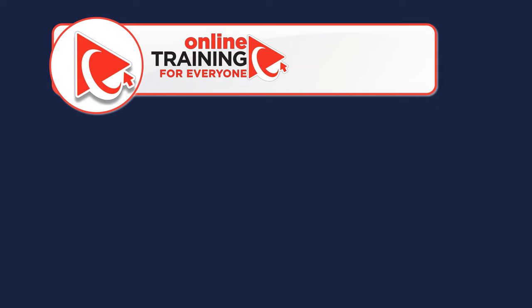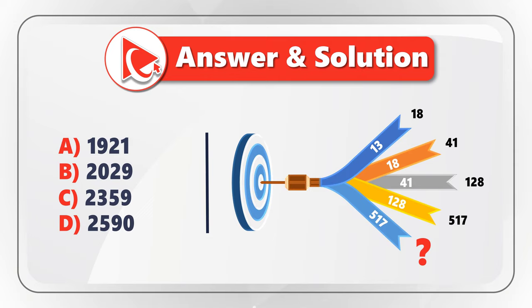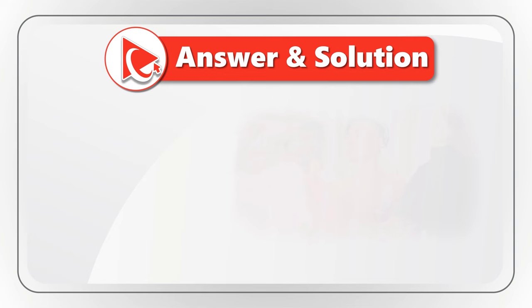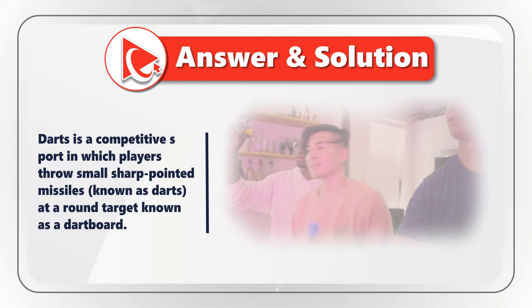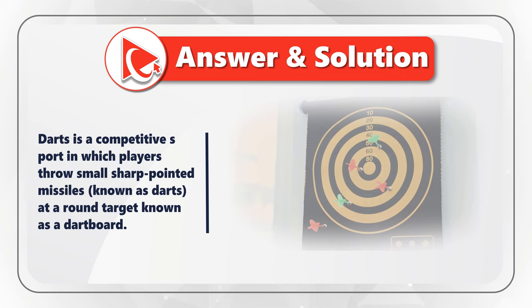Let's move forward so I can share with you my version of the answer. First, to answer this question, let's understand what we're dealing with. Since this game may not be very familiar in all parts of the world, let's start with the definition. Darts is the competitive sport in which players throw small sharp-pointed missiles, known as darts, at a round target known as a dartboard.